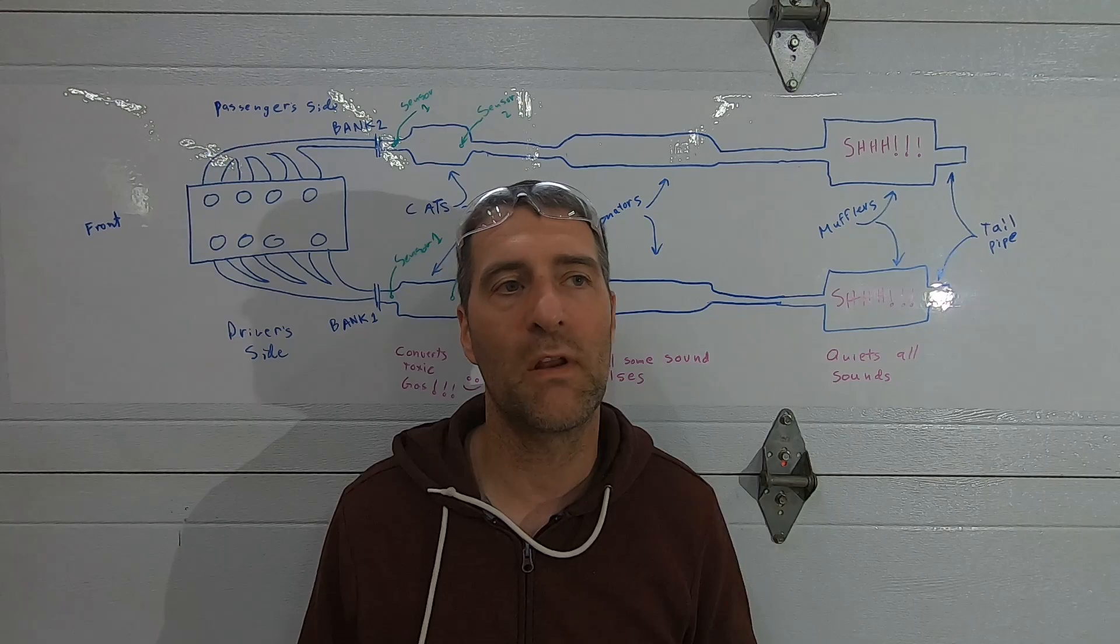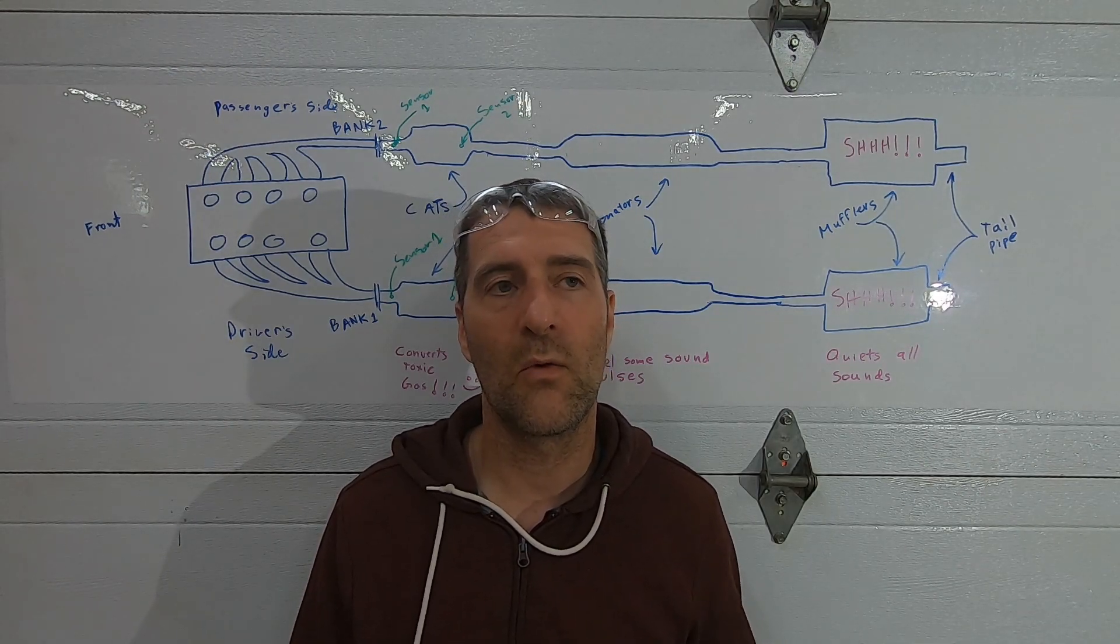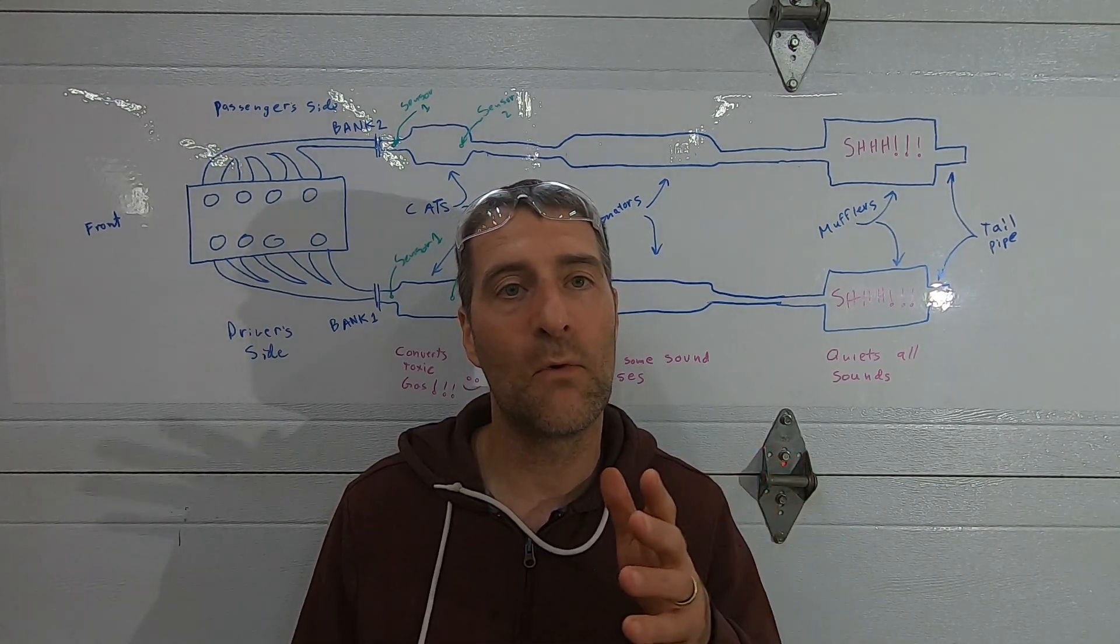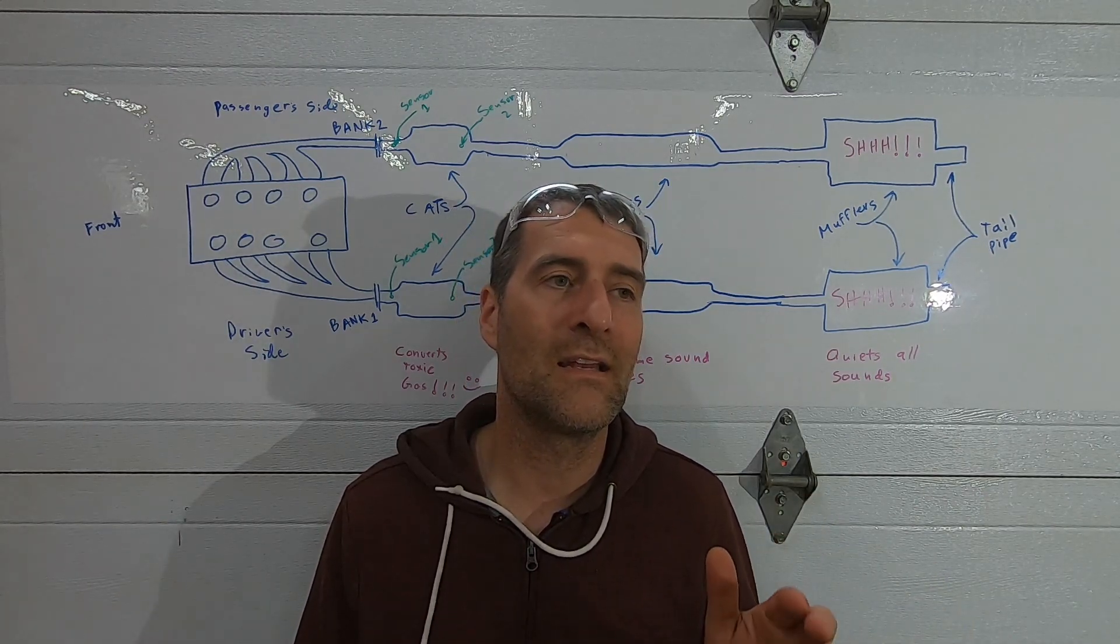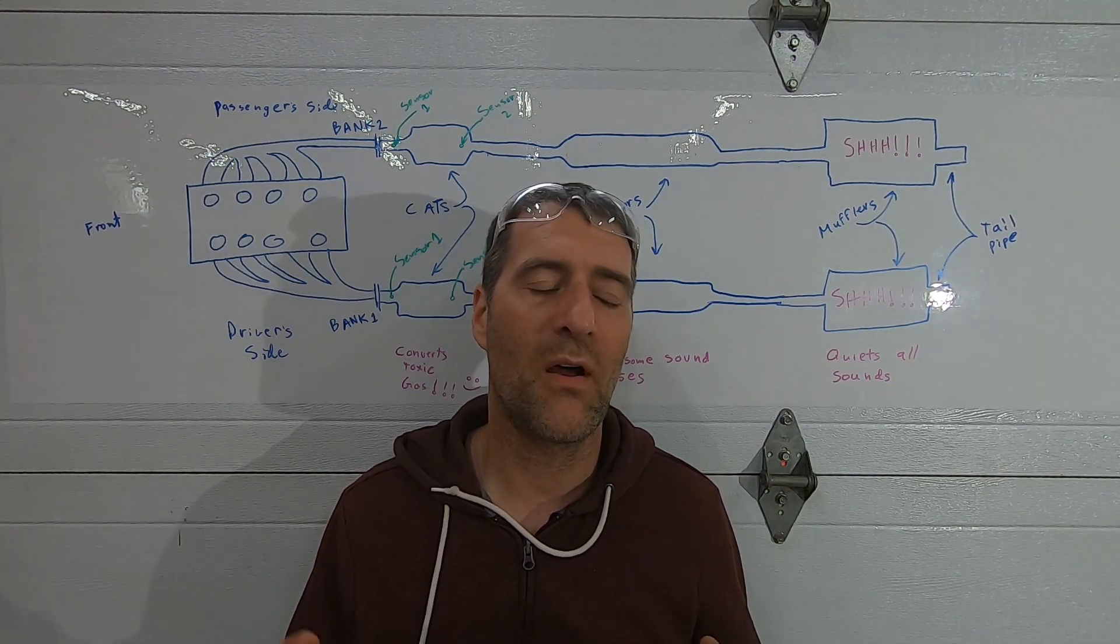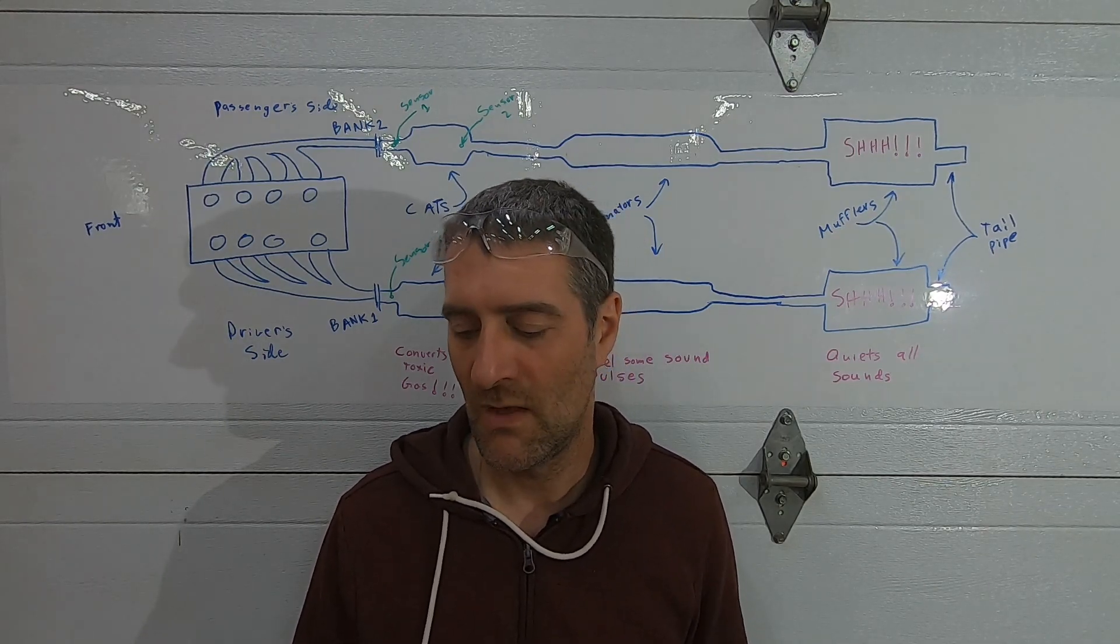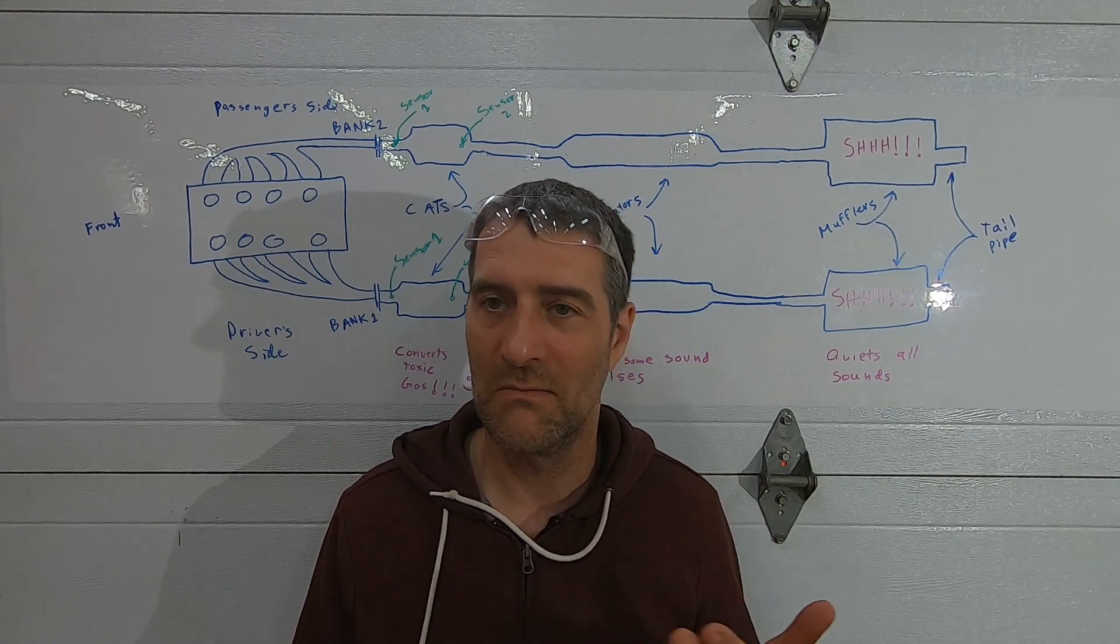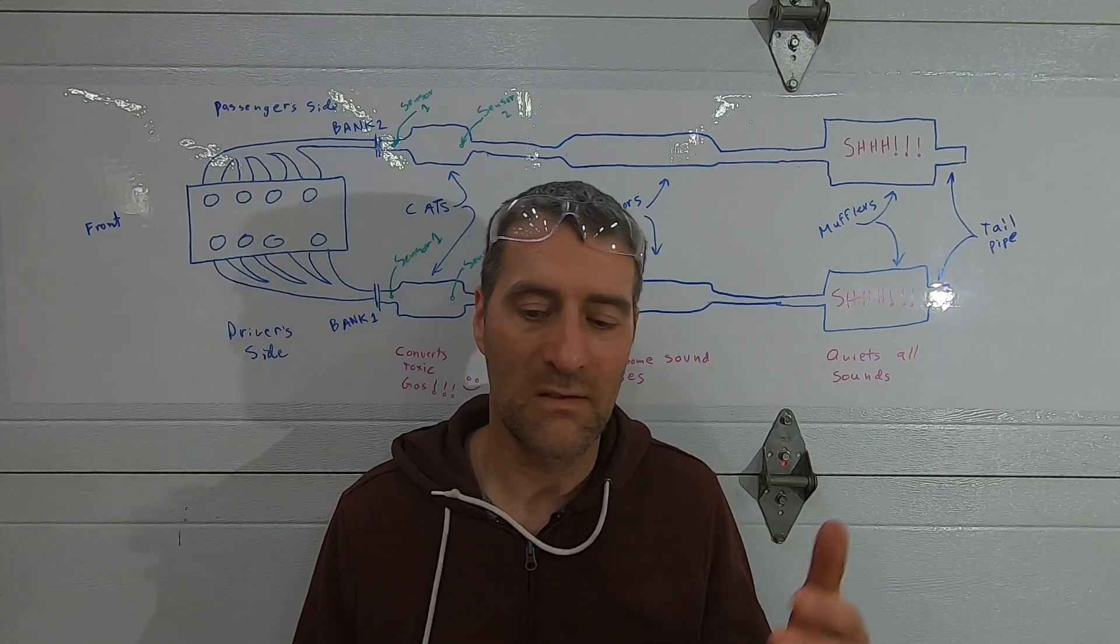Now the engine codes related to catalytic converters are P0420 all the way to P0424 or P430 up to P434. And so if you have codes in there, they all indicate an issue with the cat. It doesn't mean that the cat is responsible but there's some problem the catalytic converter is suggesting there's some kind of a problem, and that's all through the oxygen sensors. Those P codes are identified by performance of the oxygen sensor which is all related to the cat.